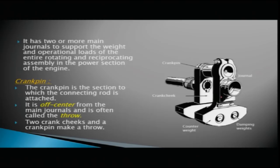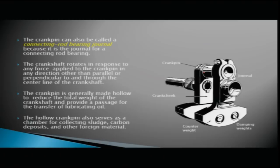One end of the connecting rod is attached to the crank pin and the other end is connected to the piston. The crankshaft rotates in response to any force applied to the crank pin — any force other than parallel or perpendicular to and through the centerline of the crankshaft.